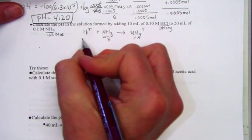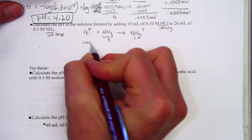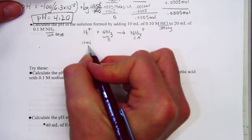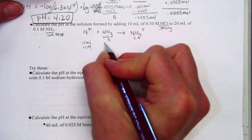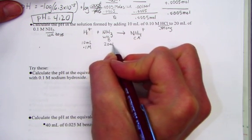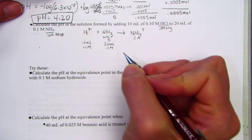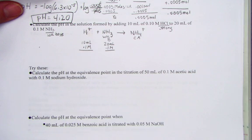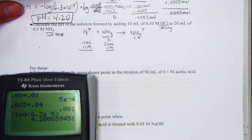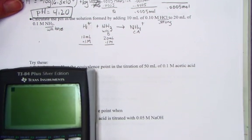If we begin by thinking about 10 mL of the strong acid at 0.1 molar concentration, and volume of the weak base is 20 mL at 0.1 molar, let's hit molarity times volume and find the number of moles and consider the stoichiometry.